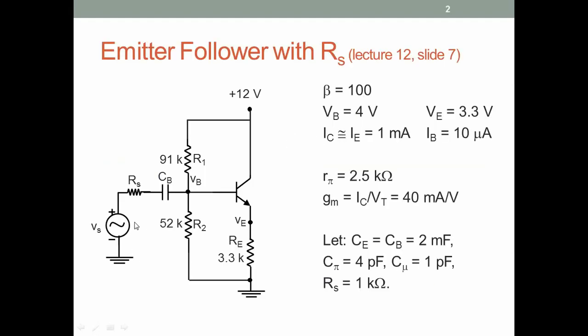This is the emitter follower circuit—the input at the base and the output at the emitter. There is no collector resistance. This circuit we have discussed in lecture 12, slide 7. Again, the DC numbers are there, AC numbers are there; these have all been the same for all our configurations.